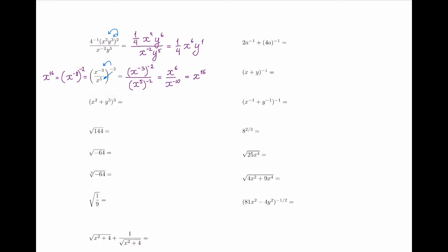In this next question, the operation is plus, not times or division. I cannot distribute the power over the plus sign. Instead I have to write it out: (x squared plus y to the fifth) cubed means that term multiplied by itself three times. I would need to expand everything out fully. Notice the huge difference between being able to bring the power down onto two factors connected by multiplication versus not being able to do this when the operation is addition.